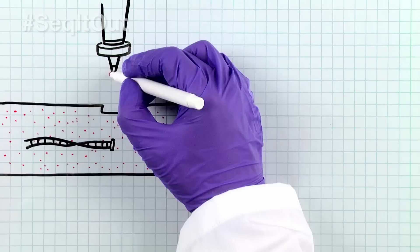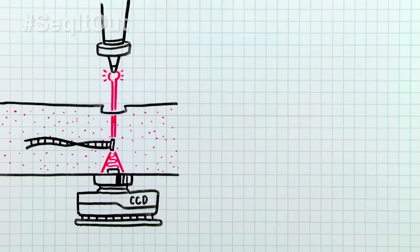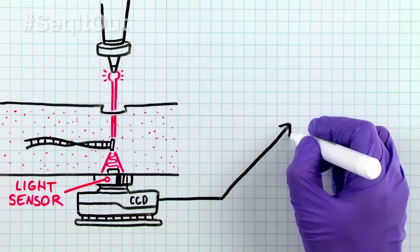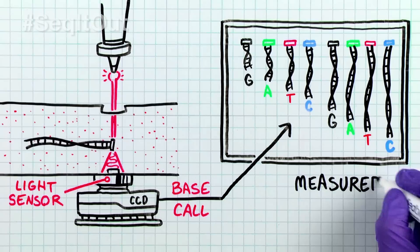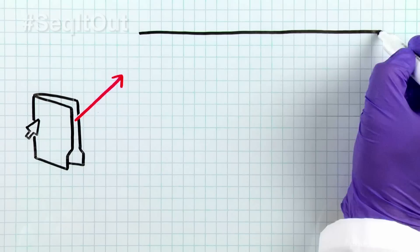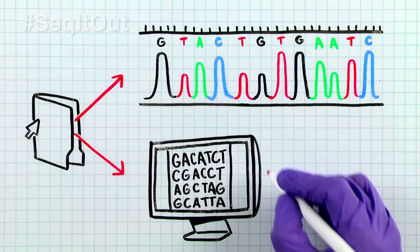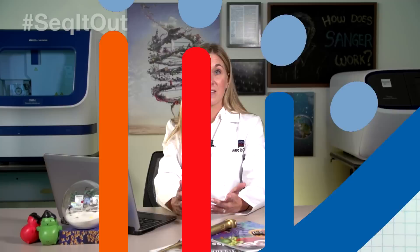A laser then excites the dye-labeled DNA fragments as they pass through a tiny window at the end of the capillary, and the excited dye emits light at a characteristic wavelength that is detected by a light sensor. Software can then interpret the detected signal and translate it into a base call. When the sequencing reaction is performed in the presence of all four terminated nucleotides, you eventually get a pool of DNA fragments that are measured and separated base by base. What you will get in the end is a data file showing the sequence of the DNA in a colorful electropherogram and a text file which you can use to answer the questions you may be asking.